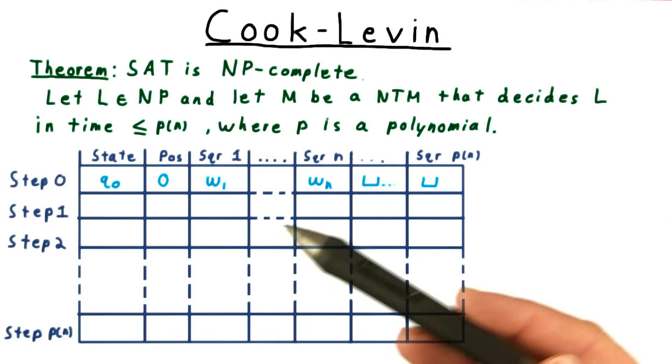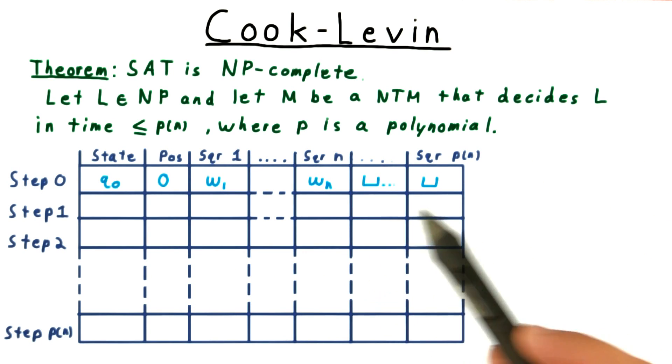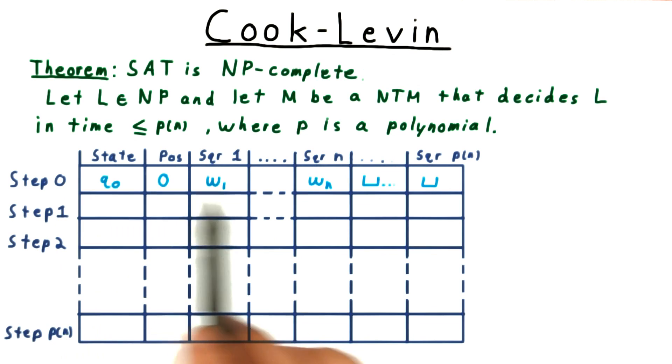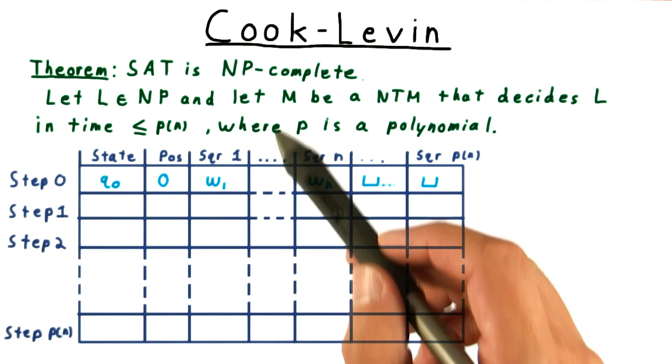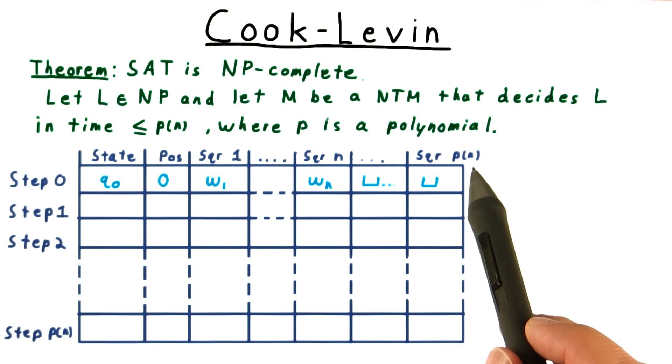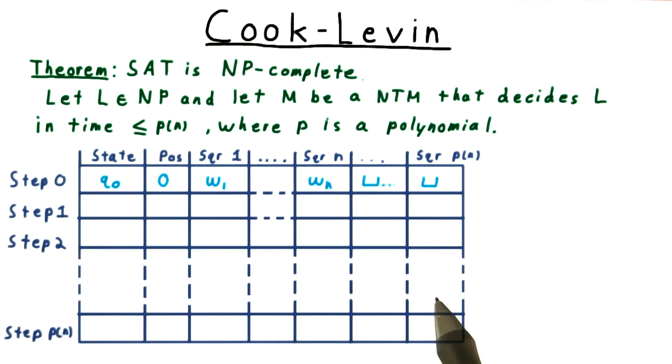An accepting computation, or sequence of configurations, for the machine M can be represented in a tableau like this one here. Each configuration in the sequence is represented by a row where we have one column for the state, one column for the head position, and columns for the values of the first P(N) squares of the tape. Note that no other squares can be written to because there just isn't time to move the head that far in only P(N) steps.